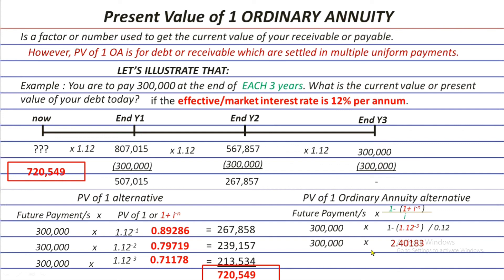Continuing: 300,000 times 2.4183 equals 720,549 — the same result as the previous methods. In the next episode, I'll teach you how to use both scientific and basic calculators to get this 2.4183 factor, in order to keep this video short. If you learned something, please click Like, Subscribe, and hit the notification bell to be updated on my next videos.